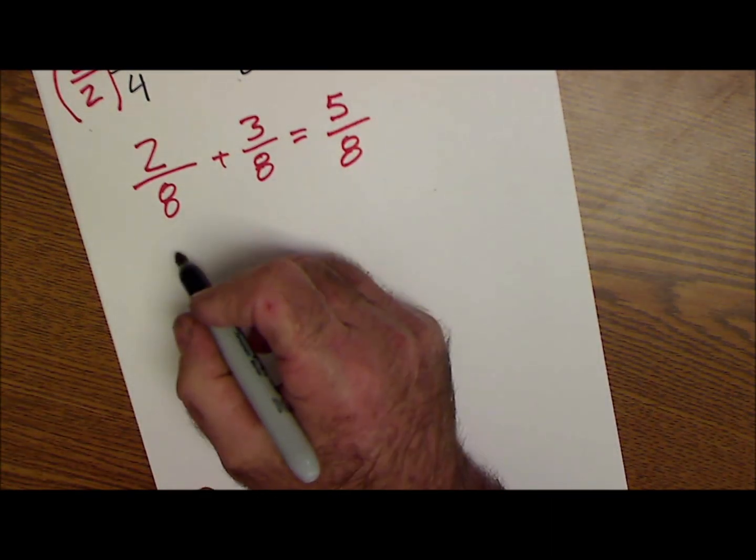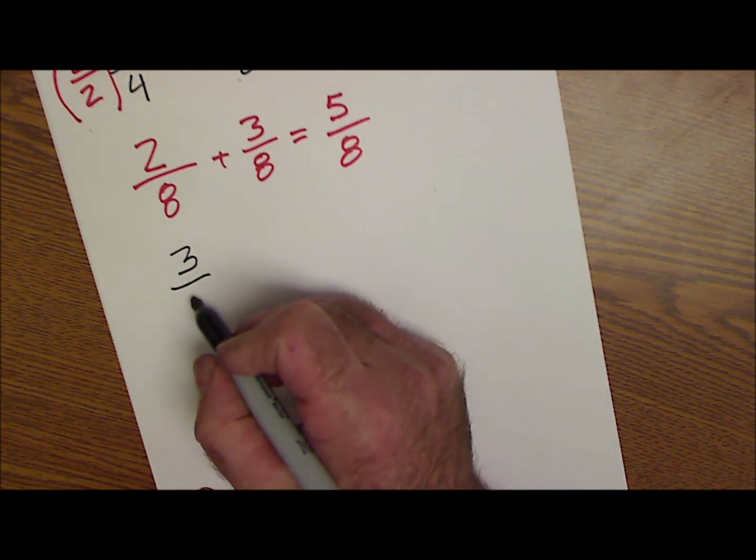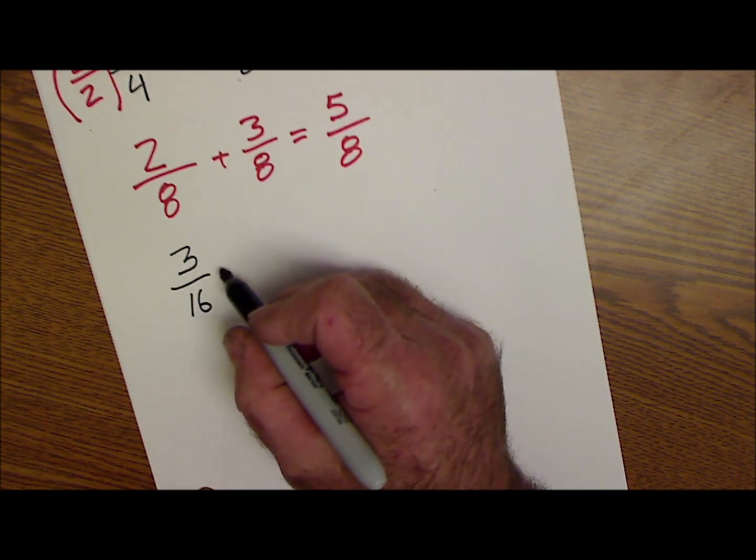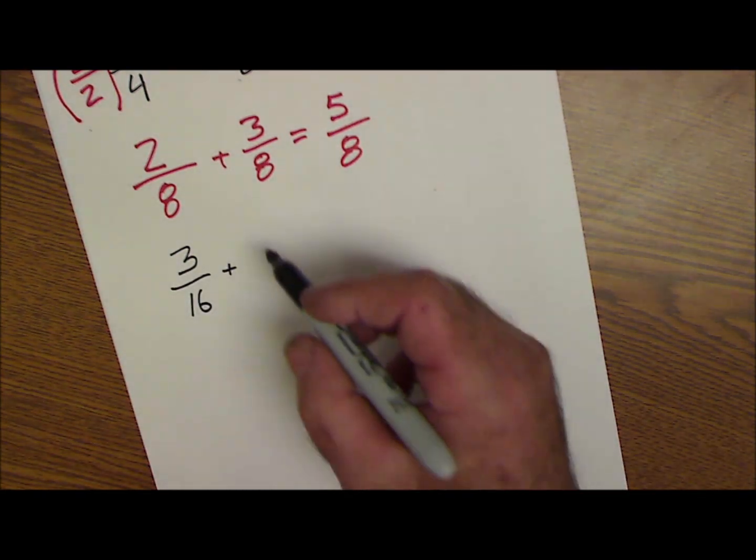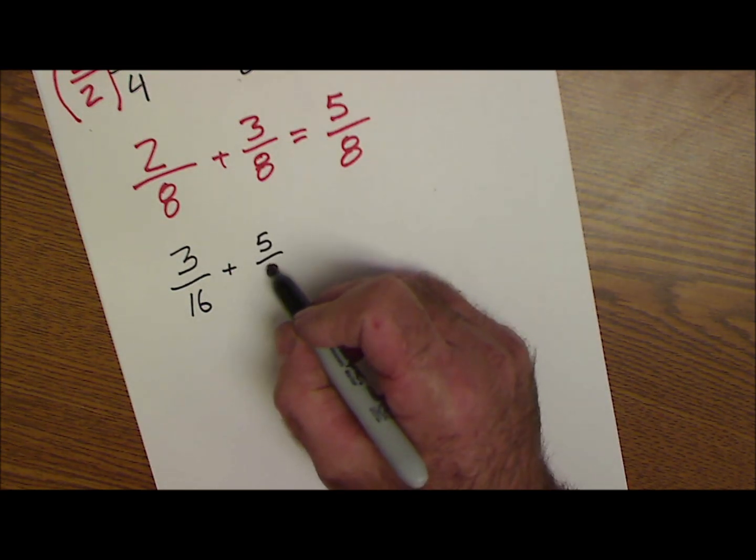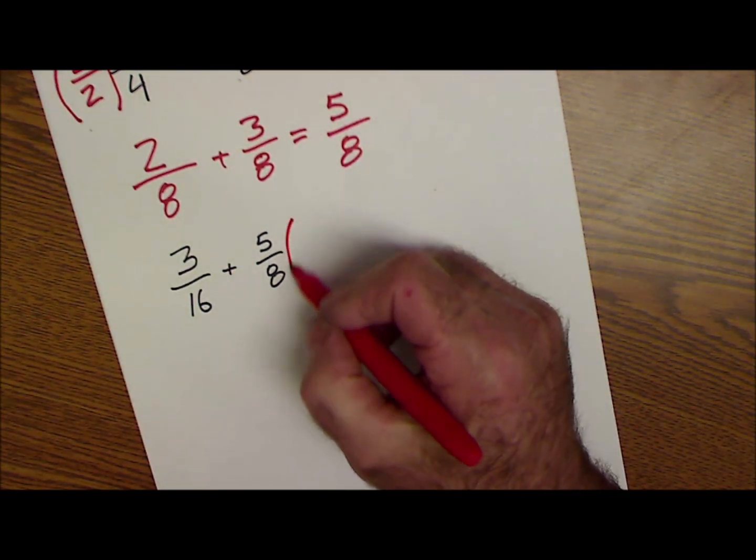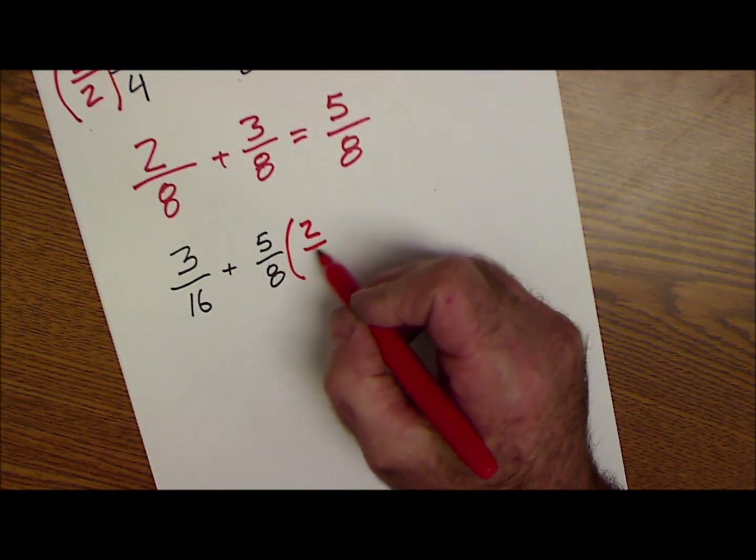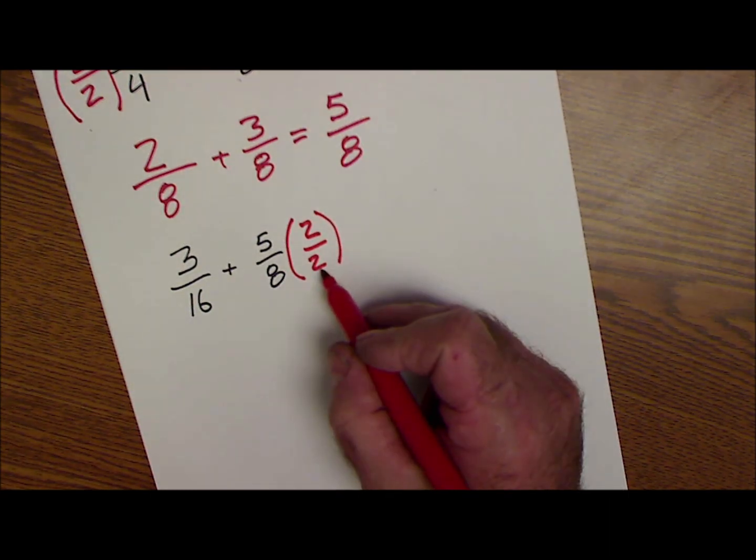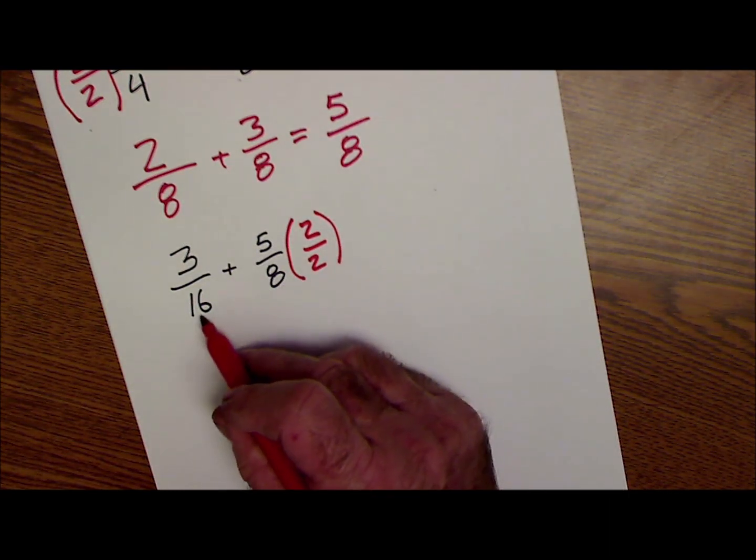Do another one here. Let's say I have three-sixteenths plus five-eighths. It's going to be the same thing. I got to get a common number of 16 on the bottom. This time I'm going to multiply this by two over two. Again, I picked that two because that's going to give me a 16 the same as this.